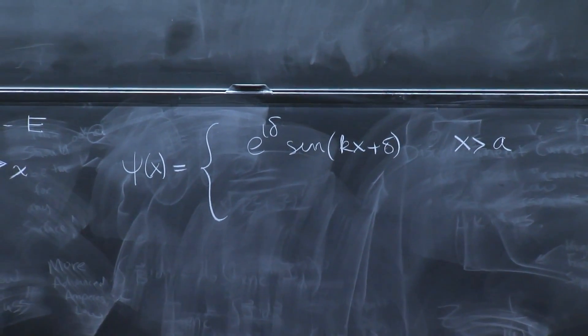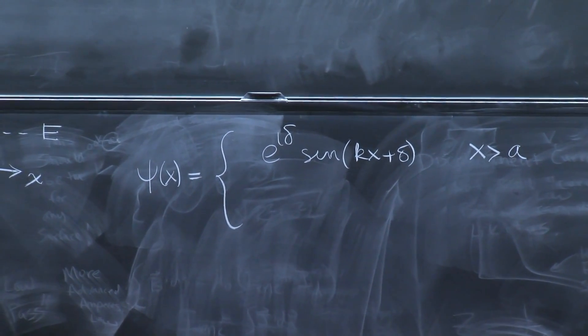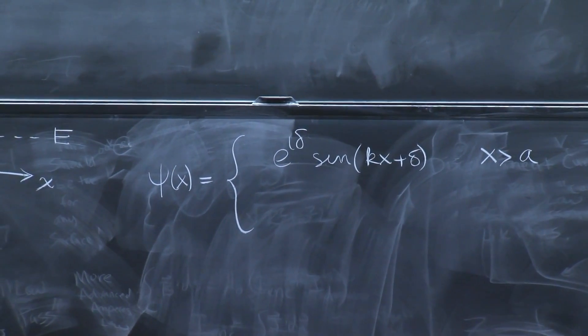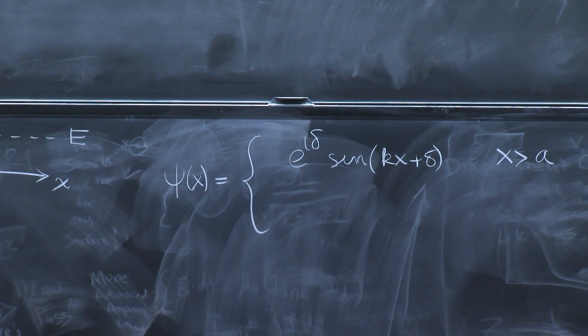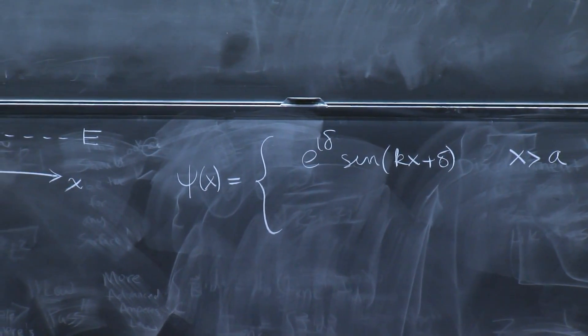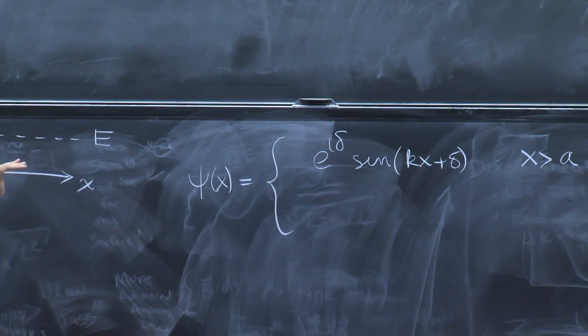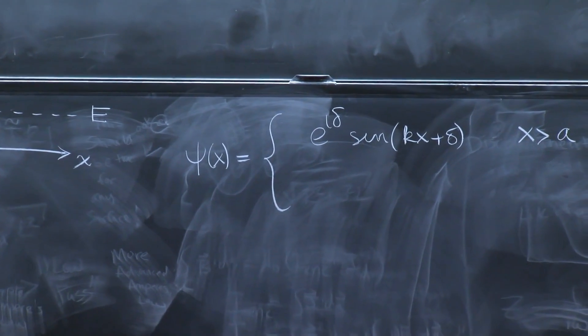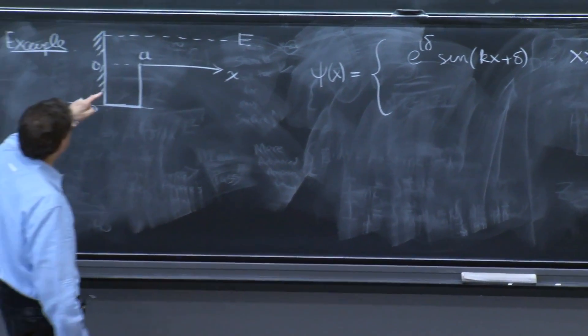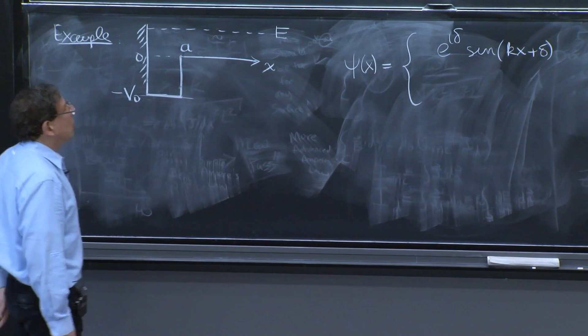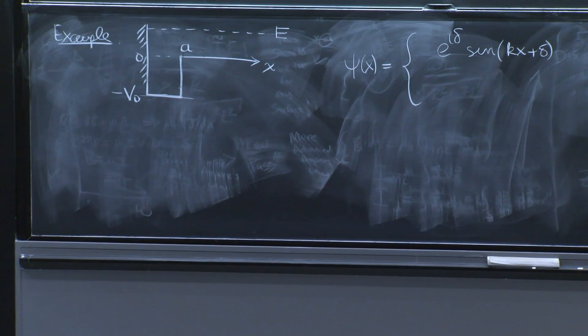You know, if you were not using that answer that has all the relevant information for the problem, time delays, everything, you would simply write some superposition of e to the i kx and e to the minus i kx with two coefficients. On the other hand here, we will have, again, a wave.